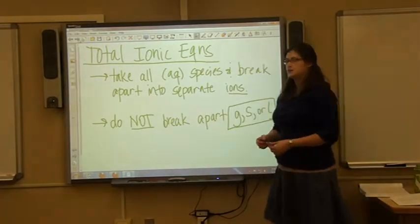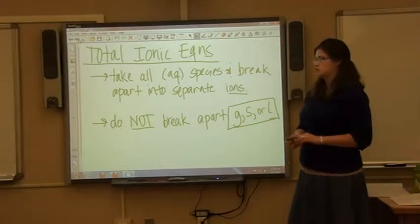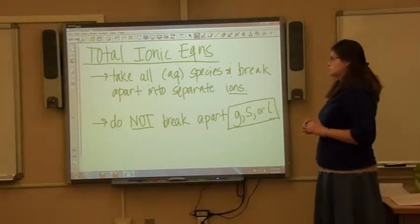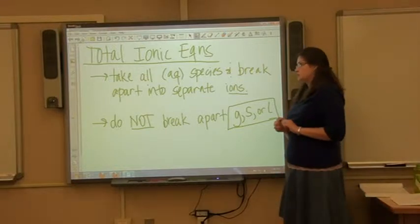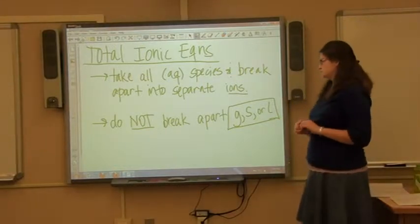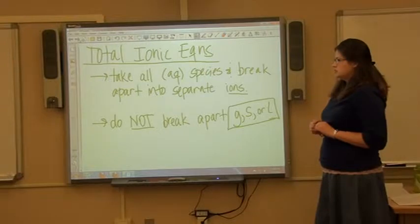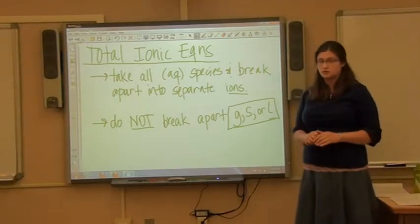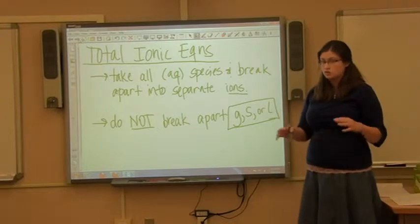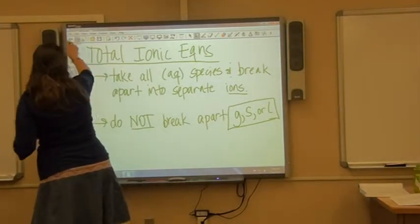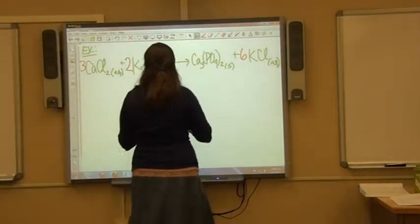Let's talk about the concept of total ionic equations. In a total ionic equation, we take all of our aqueous species and break them apart into their separate ions. An important thing to know is that we're only doing this for the aqueous substances — not for gases, solids, or liquids. Those all stay together.